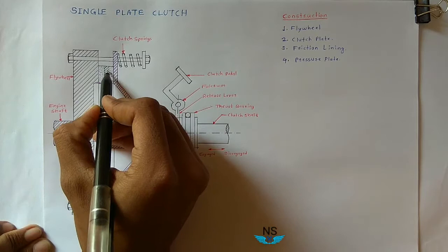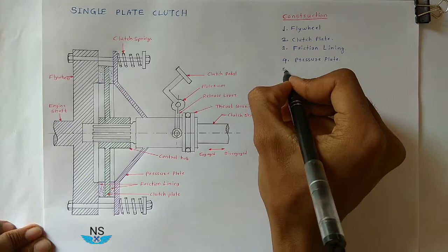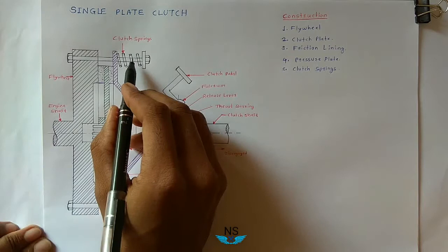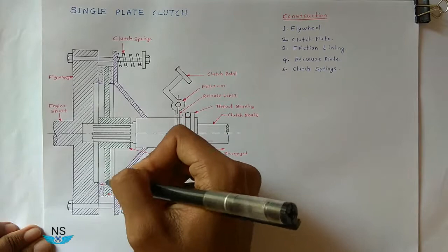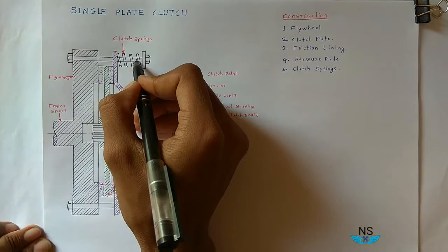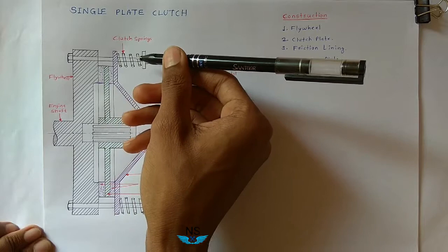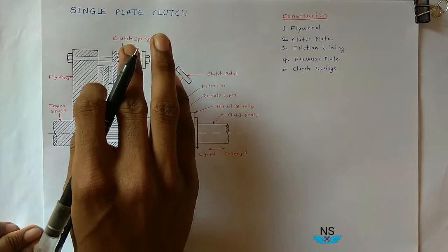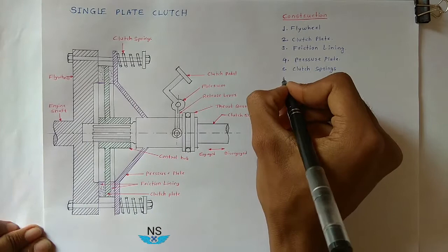The next part is clutch springs. Six to eight clutch springs are mounted on the clutch plate. Clutch springs are used to keep the clutch in the engaged position. This spring exerts a spring force on the pressure plate so that the clutch plate is engaged with the flywheel.